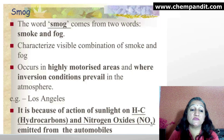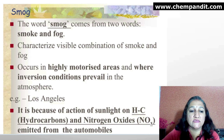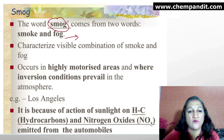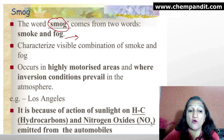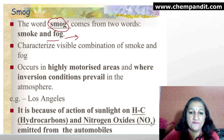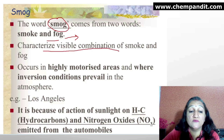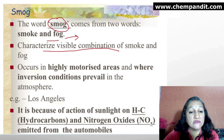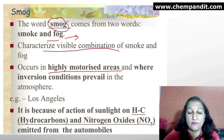Let's see what is photochemical smog. The term 'smog' is basically a combination of smoke and fog. Smoke plus fog gives smog. In simple language, when smoke particles are settled in fog, we call it smog. It is a visible combination of smoke and fog — brownish in color, which is why we can see it. It occurs in highly motorized, populated areas where there is heavy traffic.